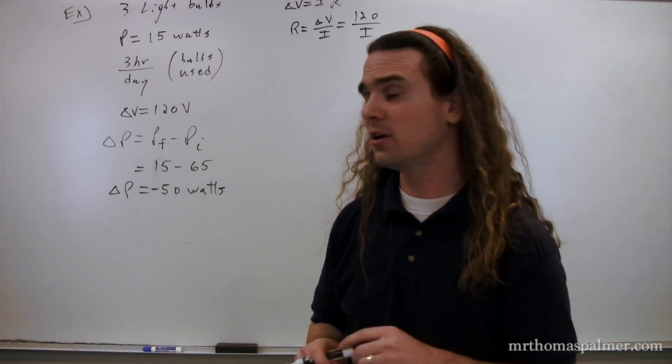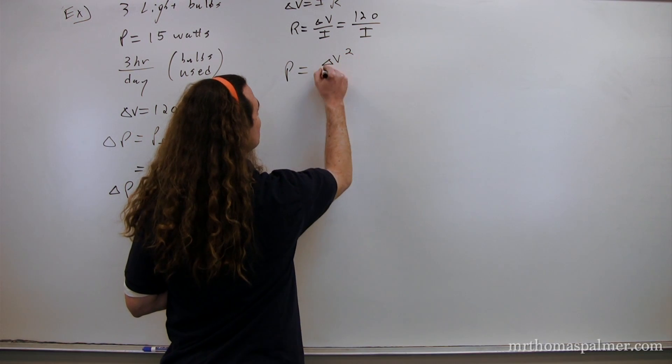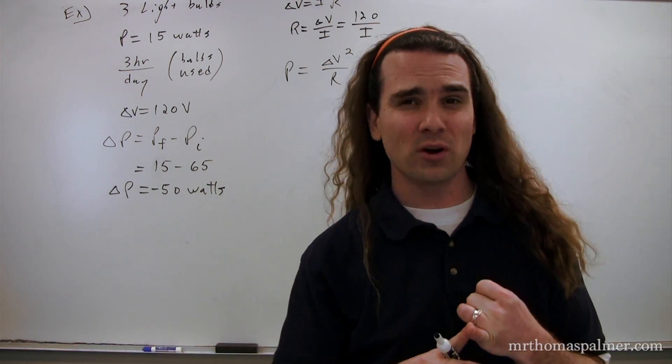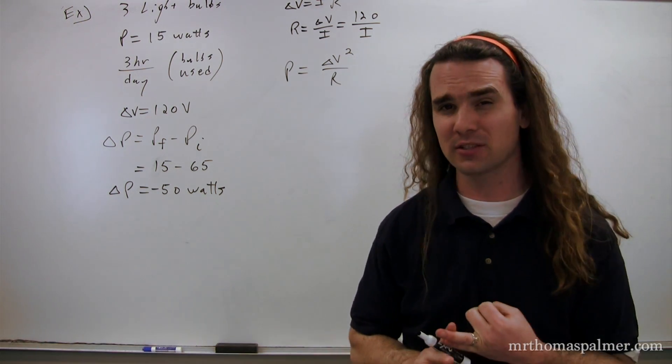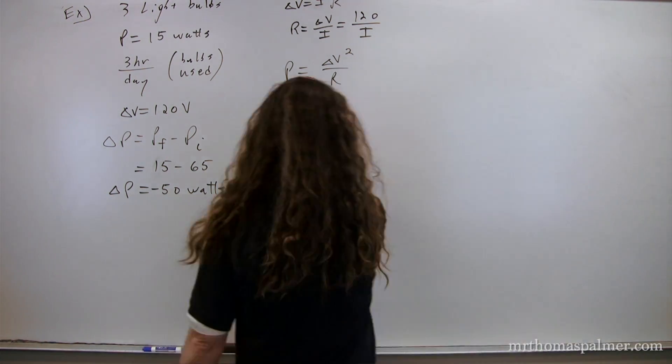We have one of them is power equals the electric potential difference squared divided by the resistance. So, we know the power for one of these light bulbs and we know the electric potential difference that it's going to be in because it's in a household circuit in the United States. So, we can solve for the resistance. It's going to be the electric potential difference squared divided by the resistance, which is equal to 120 volts squared over 15 watts, which works out to be 960.